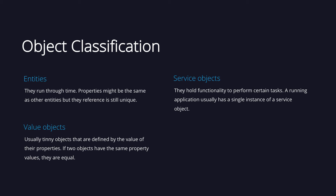Then we have value objects. They are usually tiny objects that are defined by the value of their own properties. Examples include a date, a password, or an amount of a certain value. Finally, service objects are objects that hold functionality used by other objects to perform a certain task. A running application usually has a single instance of these service objects.